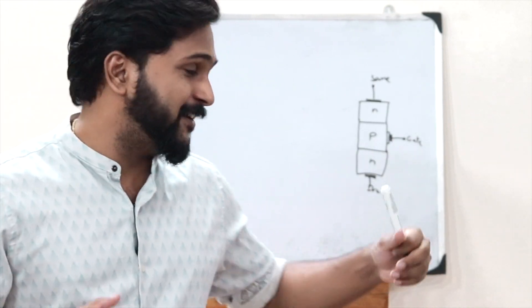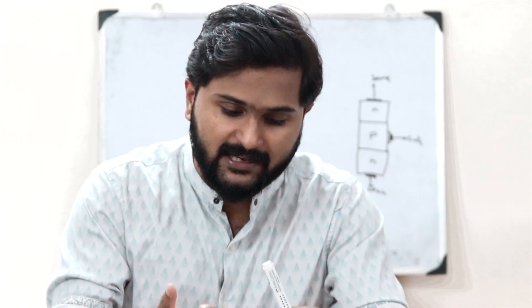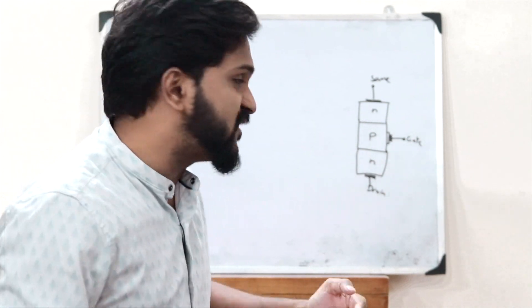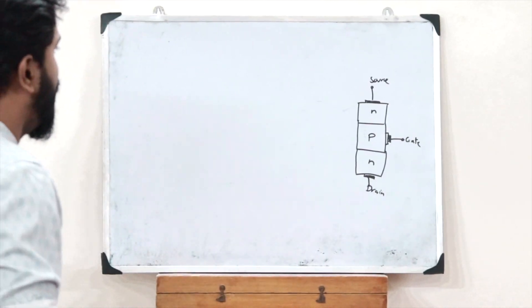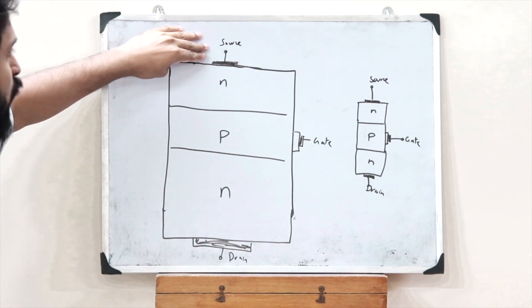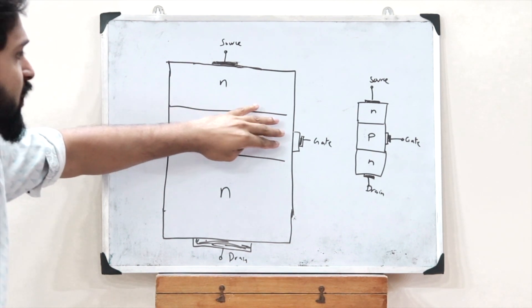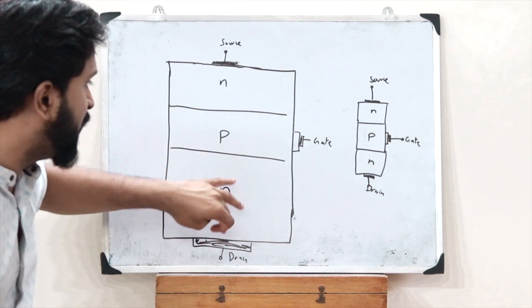A power MOSFET is simply a normal MOSFET in which certain changes are brought forth to its structure so that it has improved power handling capabilities, improved voltage handling capabilities, and also a very high switching frequency. To achieve all those, certain changes must be made. So let us expand this and draw it here — the source is connected to an n-type semiconductor material, the gate to a p-type semiconductor material, and the drain to an n-type semiconductor material.